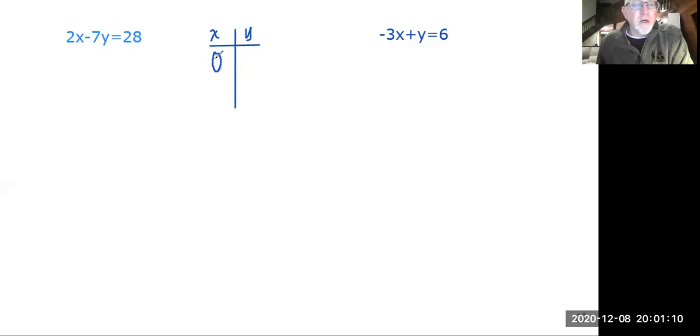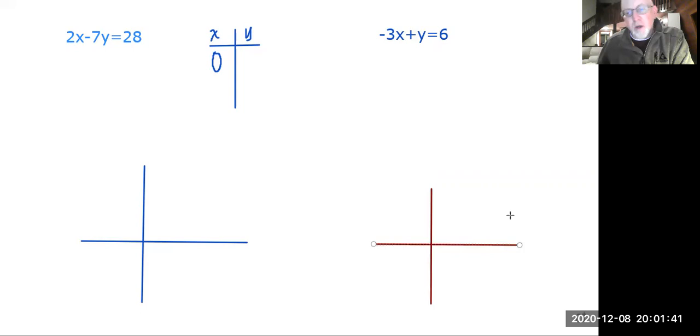When I choose zero for x, I'm in essence finding one of the intercepts, the y-intercept. Because on the graph, everywhere along the y-axis is x equals zero. Everywhere along the x-axis is y equals zero. So it helps to make the x-intercepts and the y-intercepts and that's what's being asked in the homework.